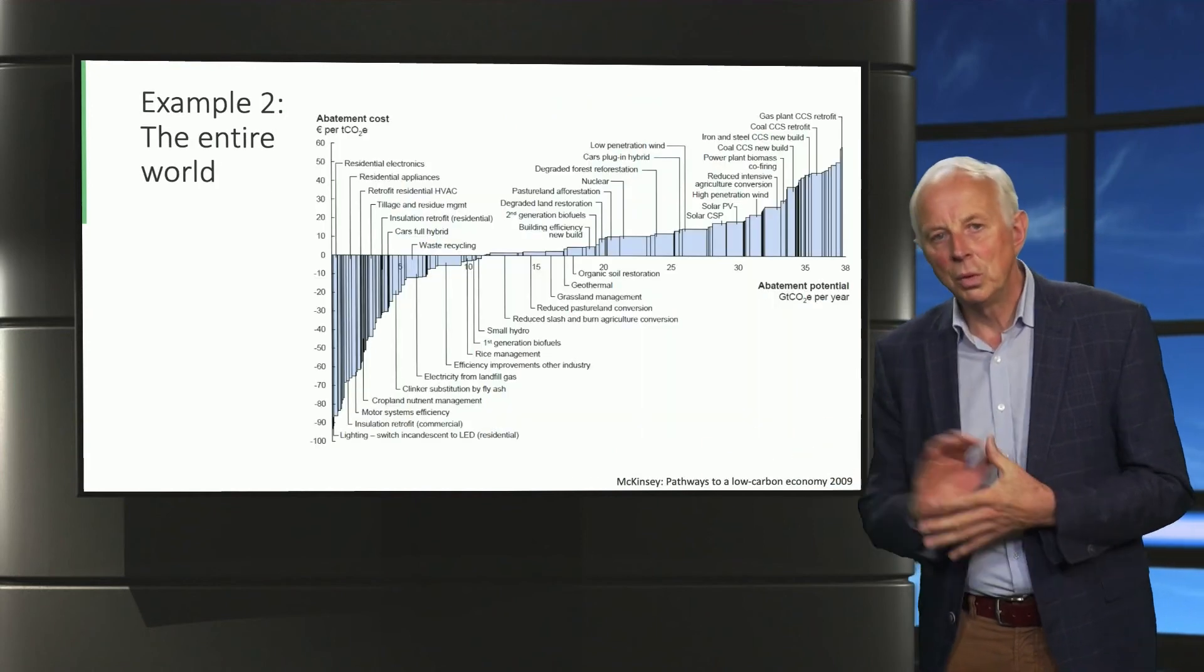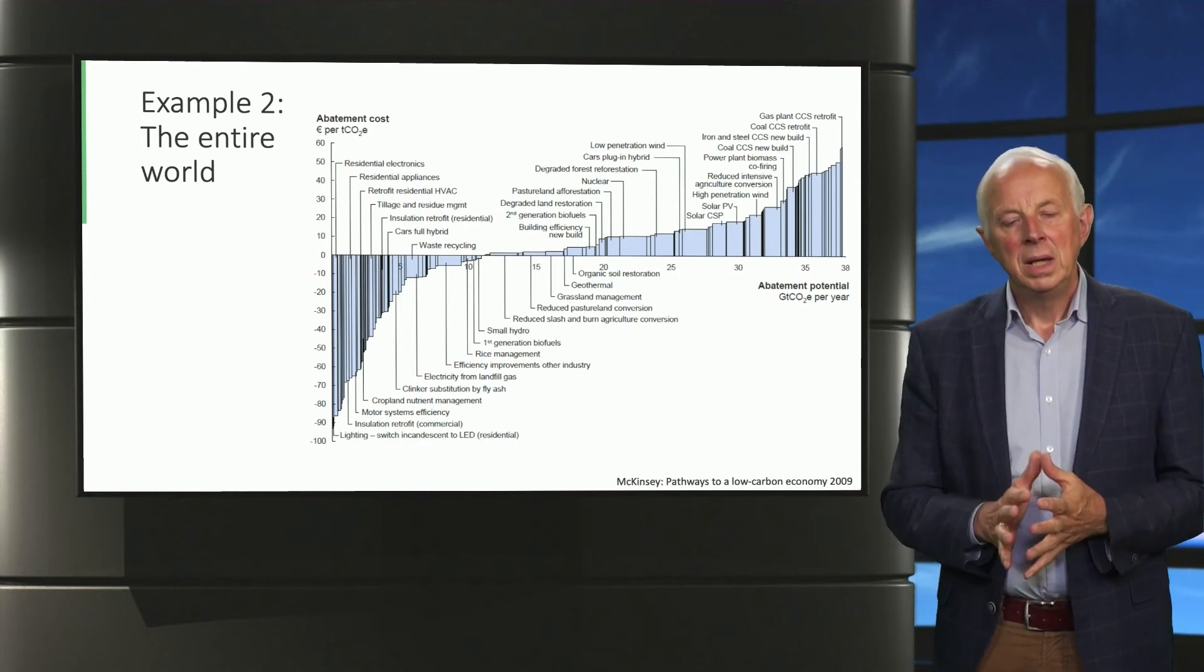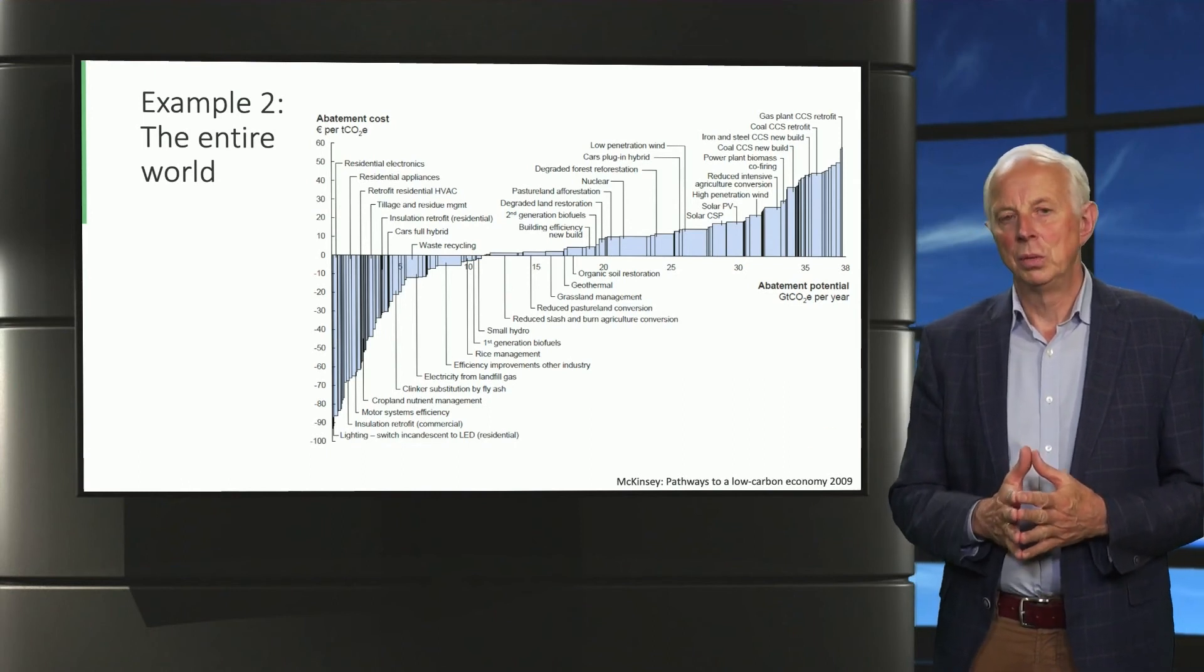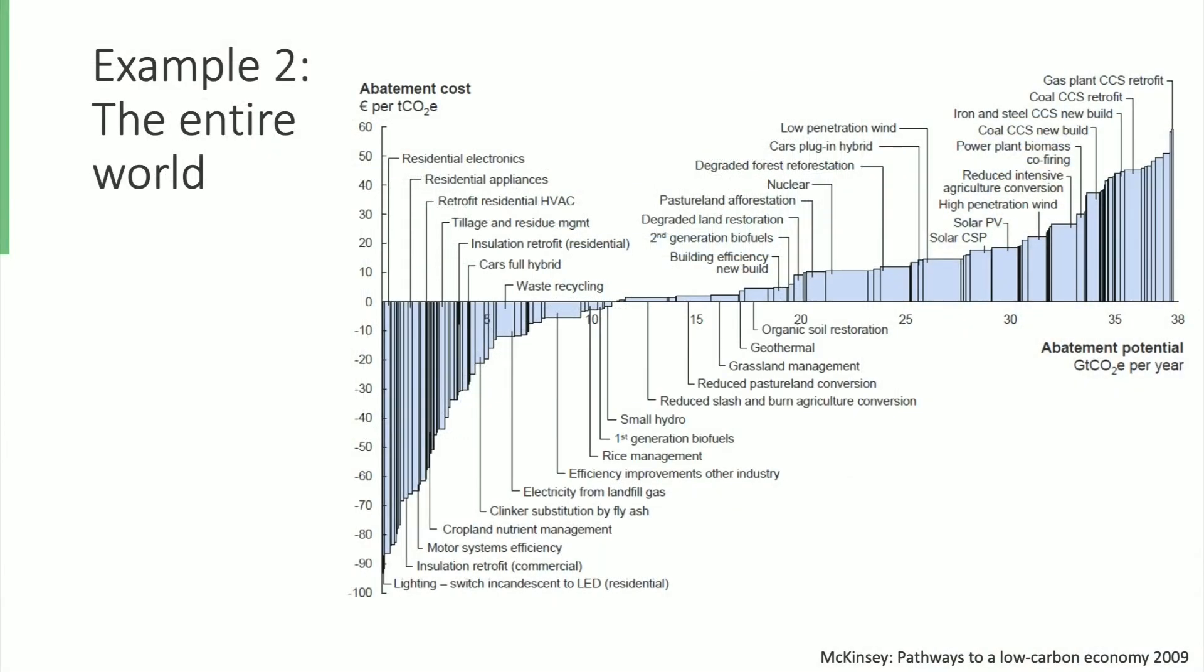Let's move on to a follow-up example. This one is completely different. It is a marginal abatement cost curve for the entire world, valid for 2030. It is probably one of the most famous graphs. It was developed by consultancy firm McKinsey in 2009. They were the first to develop a MACC curve for the entire world.